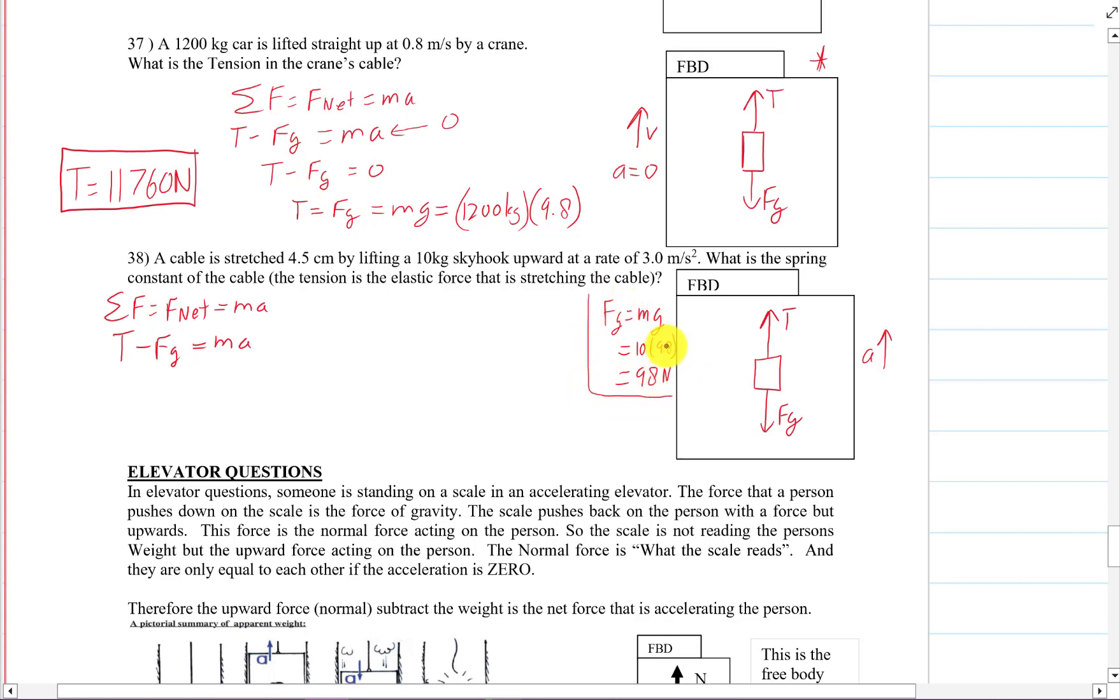So I'll just do a little bit of a side calculation here. So this is tension minus 98 newtons is equal to 10 times 3. The acceleration is 3. So this tension is going to be 98 plus 30, which is 128 newtons.